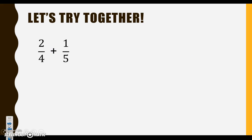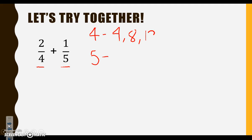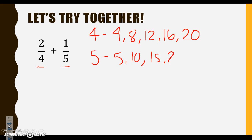Let's try another one. We have 2 fourths and 1 fifth that we're adding together. The denominators aren't the same, so we have to find a multiple that they have in common. Multiples of 4: 4, 8, 12, 16, 20. Multiples of 5: 5, 10, 15, 20, 25. Do we see a multiple that they have in common? Definitely — we have 20 in common.